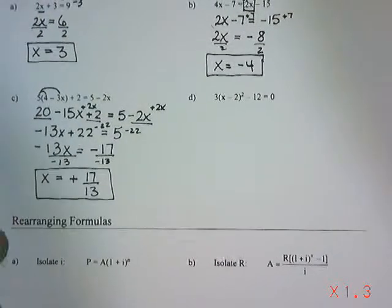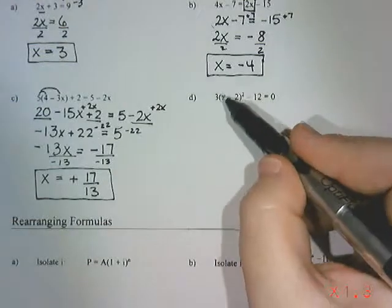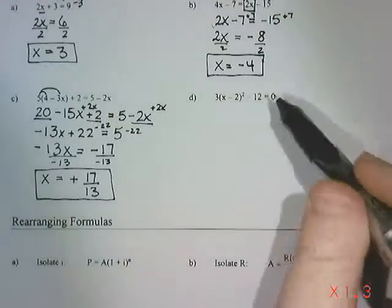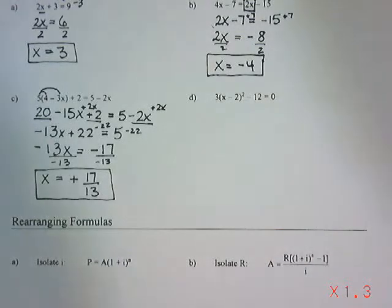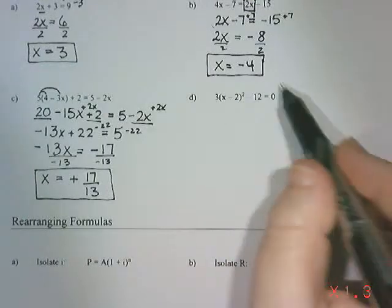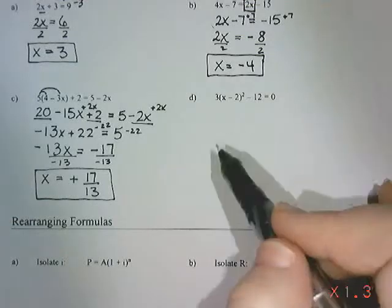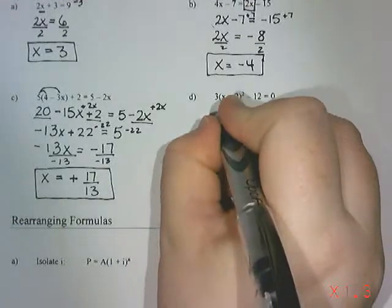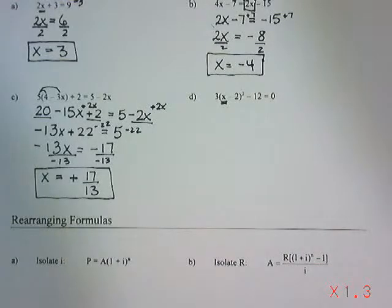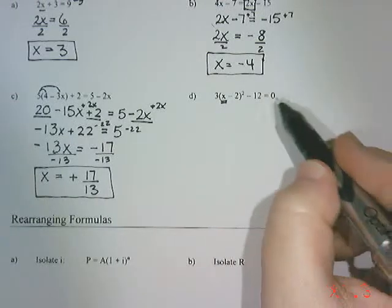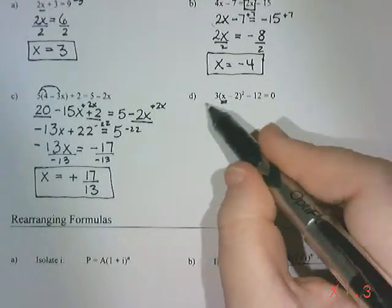All right. Last question here. I have 3 times x minus 2 squared minus 12 equals 0. So to solve this, there's a couple of different ways you can do it. We could multiply everything out, get a quadratic, and then factor, solve. Or I could just do a little rearranging. So if you have an x all by itself, you can do some rearranging. If you do not have an x all by itself, then you would need to look at finding another method of solving. But I'm going to try to isolate the x, since there's only one of them, by moving everything over.